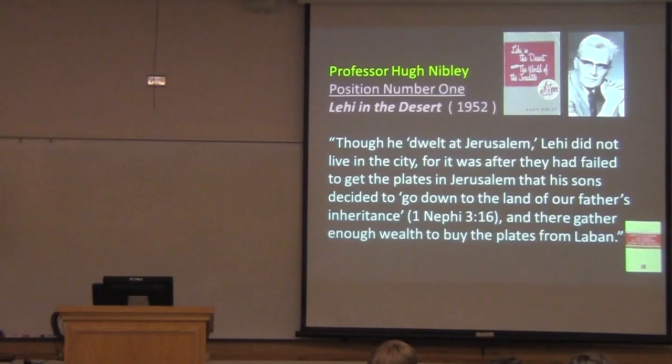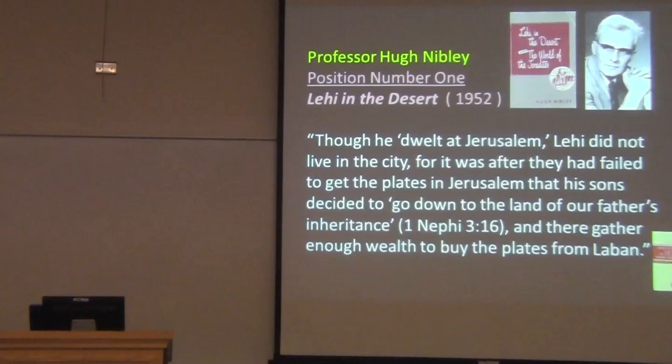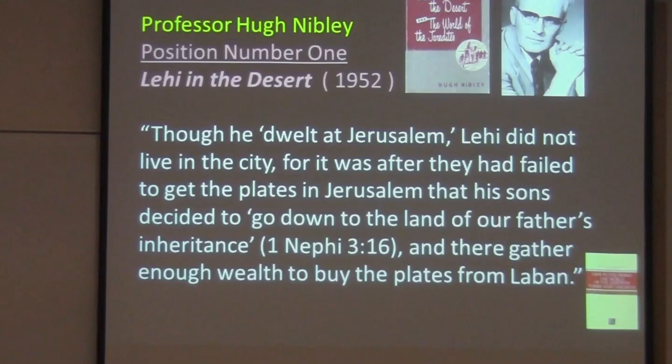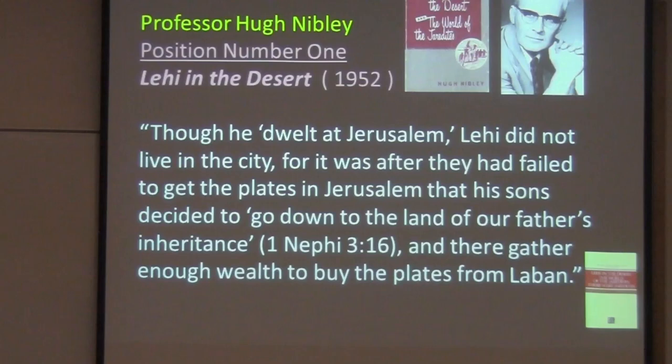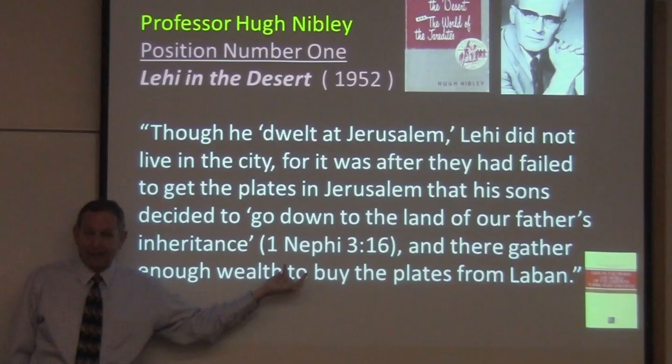Why does he say this? Because he notes that there is a land of inheritance. He says that after they had failed to get the brass plates in Jerusalem, Lehi's sons decided to go down to the land of their father's inheritance and there gather enough wealth to buy the plates from Laban. So Nibley's assumption was that if the wealth of Lehi is in a certain place — the land of inheritance — that must be where Lehi lives. Now, by the way, that's wrong.